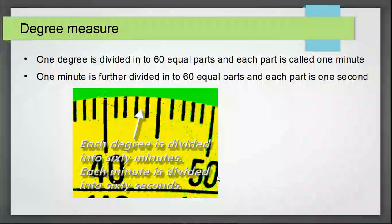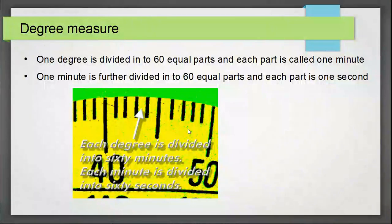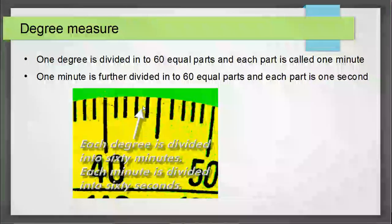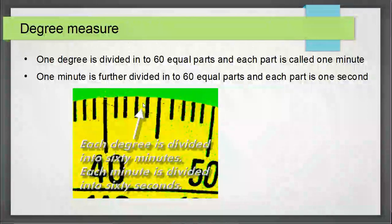One degree is further divided into 60 equal parts, and each part is called one minute. One minute is a very small quantity of angle. One minute is further divided into 60 equal parts, and each part is called one second.